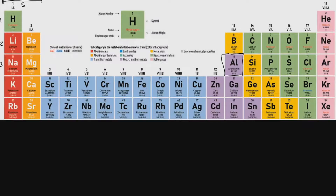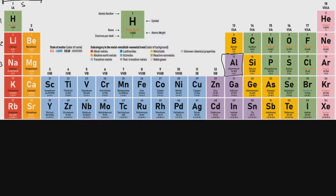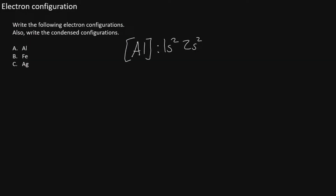After completing level 1, we move to level 2. On the left side, we are again in the S block with two boxes, so we write 2S2. Once we complete the S block, we jump across the gap in the periodic table to the P block. We are on level 2 and haven't reached aluminum yet, so we continue across the P block. The P block has 6 boxes, so we write 2P6.